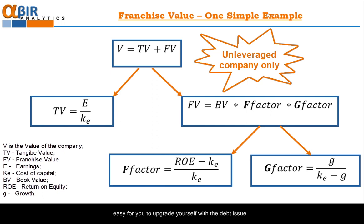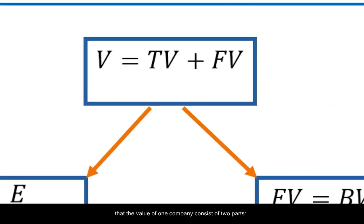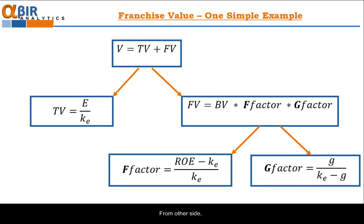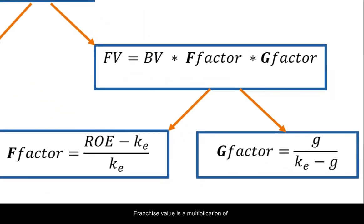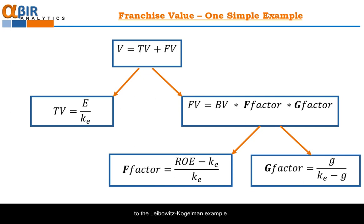But we believe that if you can grasp the idea in its simplified form, it will be easy for you to upgrade yourself with a debt issue. As we can see, this concept assumes that the value of the company consists of two parts: tangible value and franchise value. Franchise value is a multiplication of book value, F-factor, and G-factor. Behind these simple formulas, we can see deep and serious economic logic, so we move to the Leibovitz-Kogelman example.